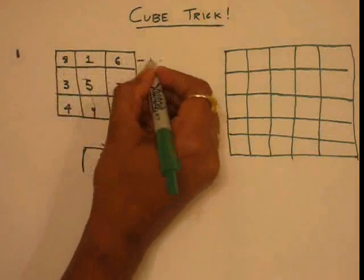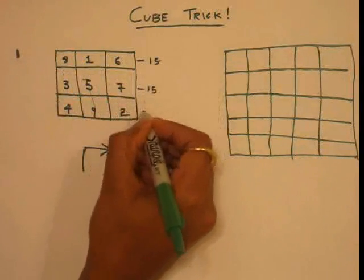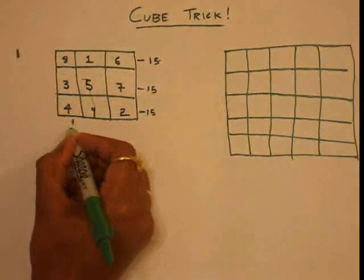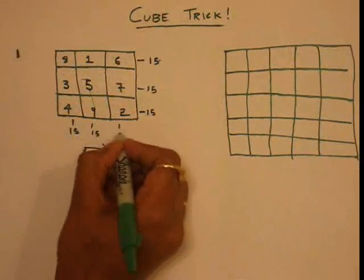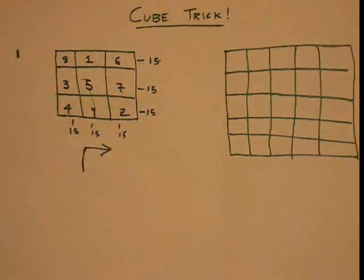If you see, the sum of any row or any column is 15. It's a pretty simple trick.